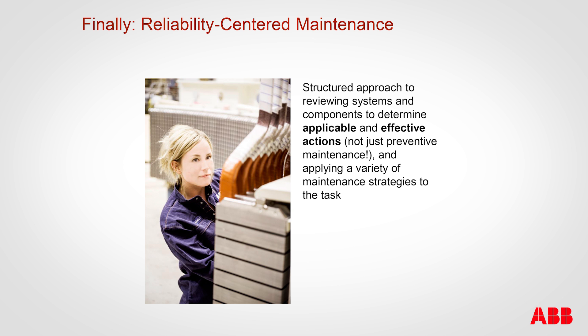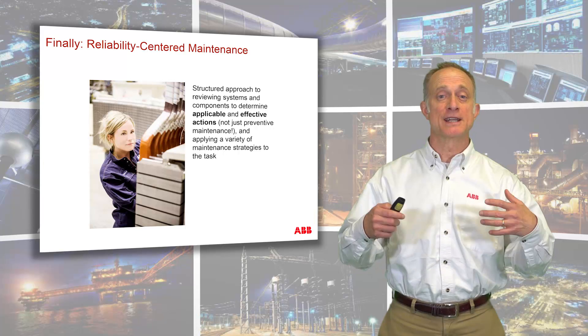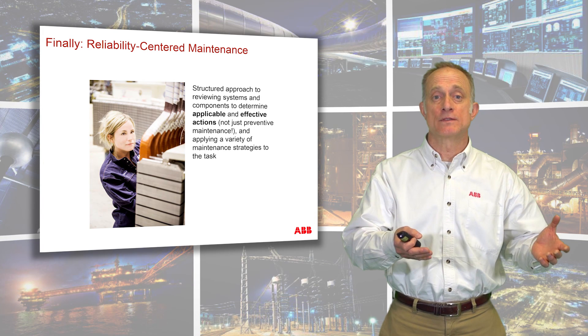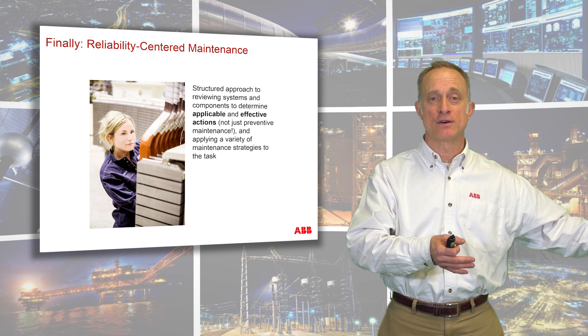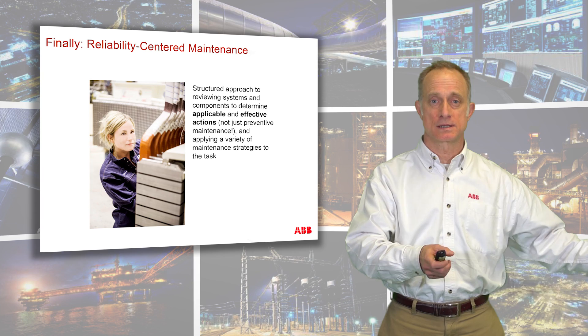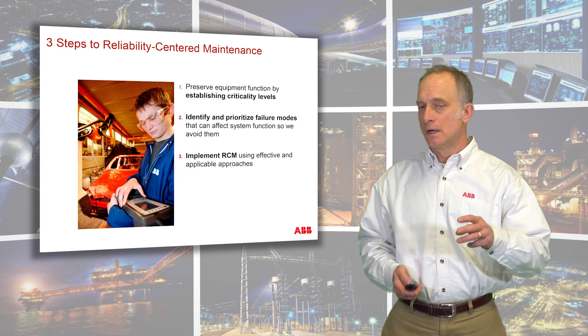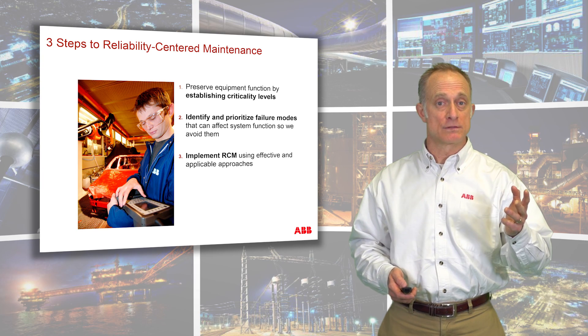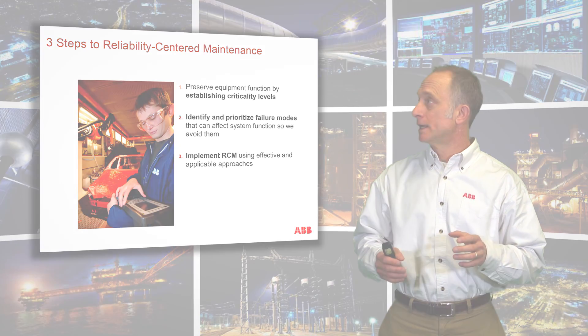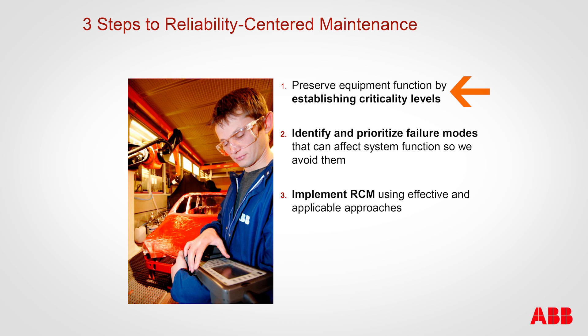Even reactive maintenance — or a strategy might be to not choose any maintenance approach at all. The right strategy might be to just let a piece of equipment run to failure if it's low cost and you have a hot spare. Maybe it's just too costly to try to touch that on a regular basis — let it fail. So the three main steps to effective reliability-centered maintenance are: first, preserve equipment functionality by establishing criticality levels; second, identify and prioritize failure modes; and third, implement reliability-centered maintenance by choosing the correct approaches.